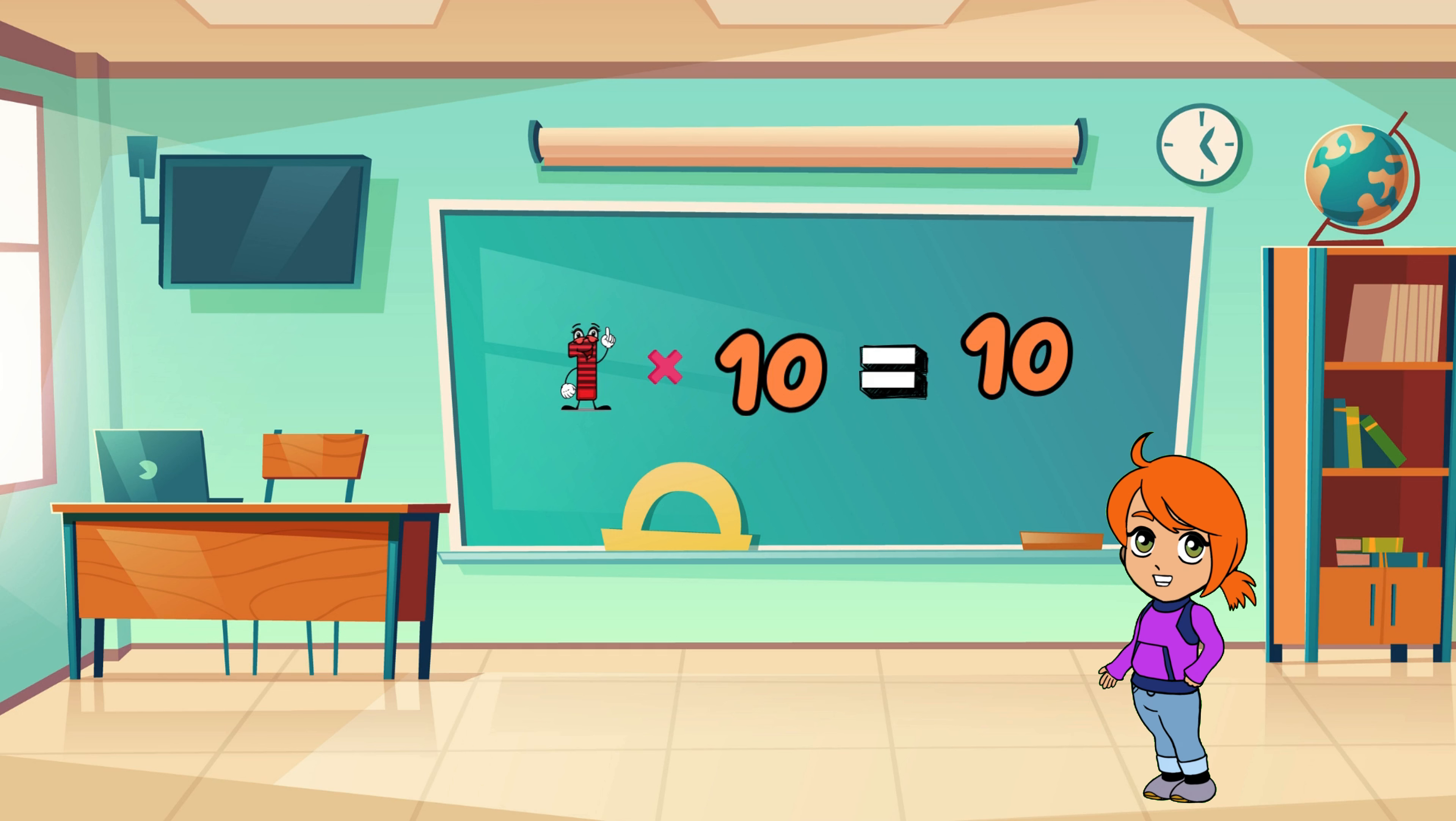Well, it's just 10, because 10 added once is 10. Now let's try 2 times 10. If we add 10 two times, what do we get? That's right, 20!